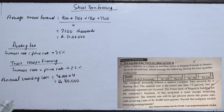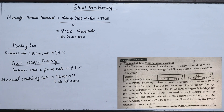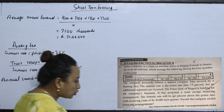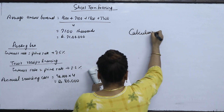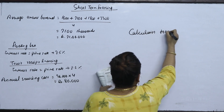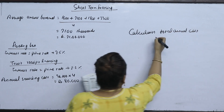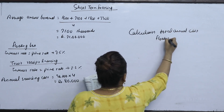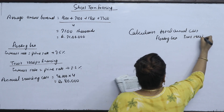So the question is: should the company switch its financing arrangement? The company currently uses floating line financing, and the alternative is trust receipt financing. We need to calculate the total annual cost of both options to make a decision.